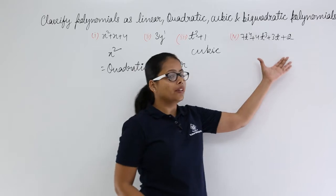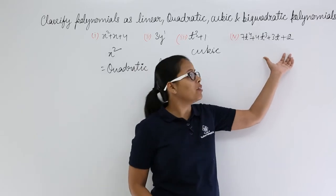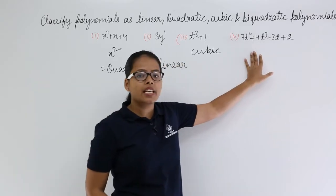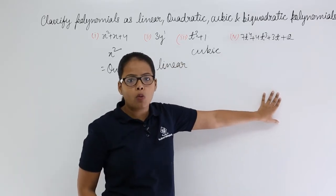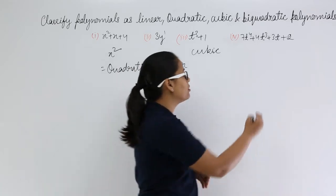Now here in this expression you can see that the highest power is 4, so this is bi-quadratic.